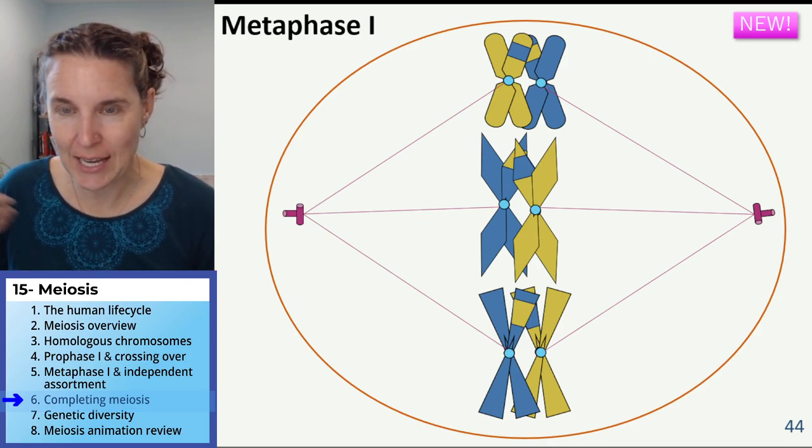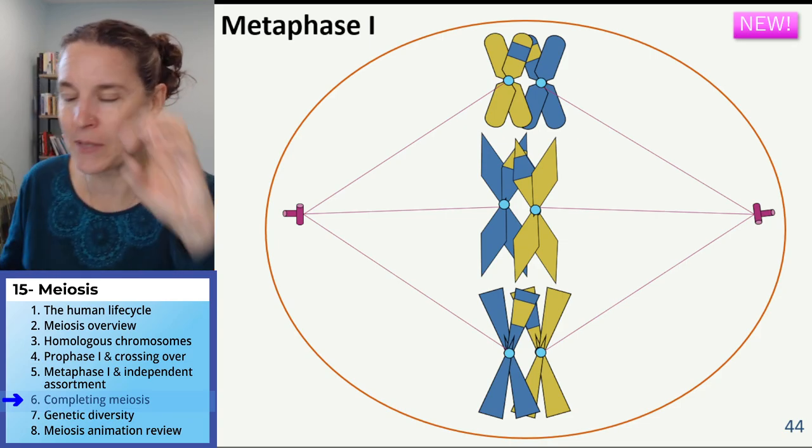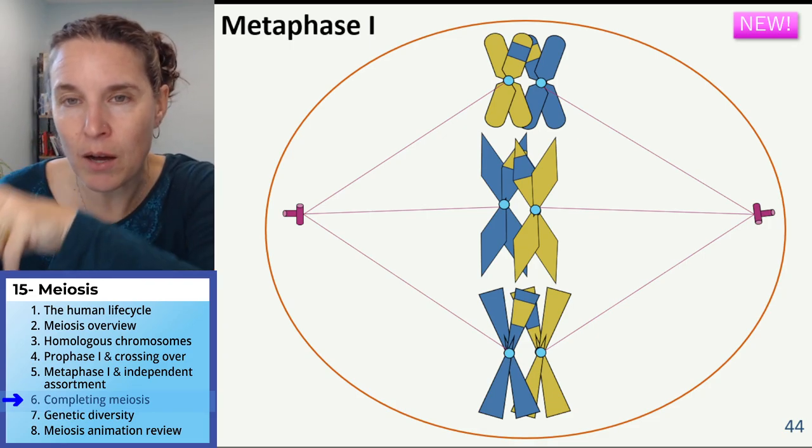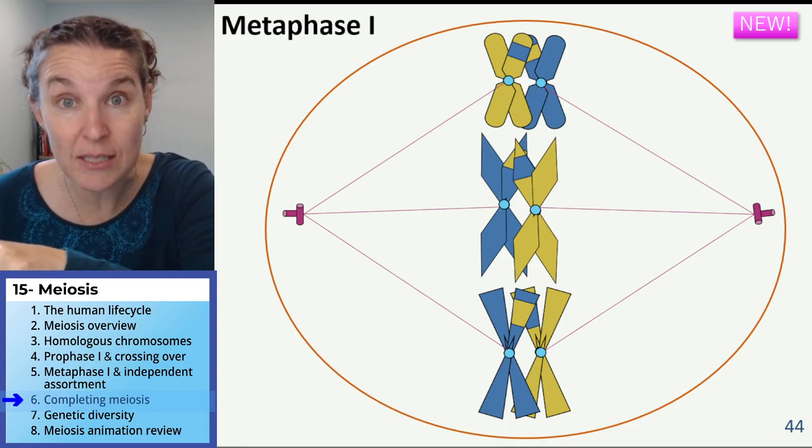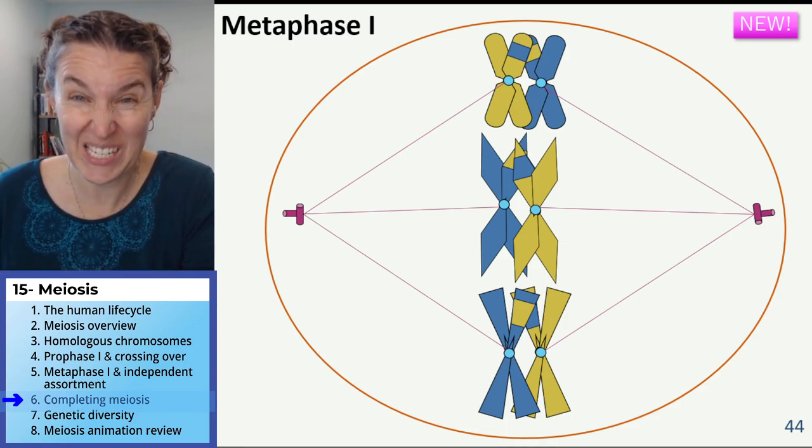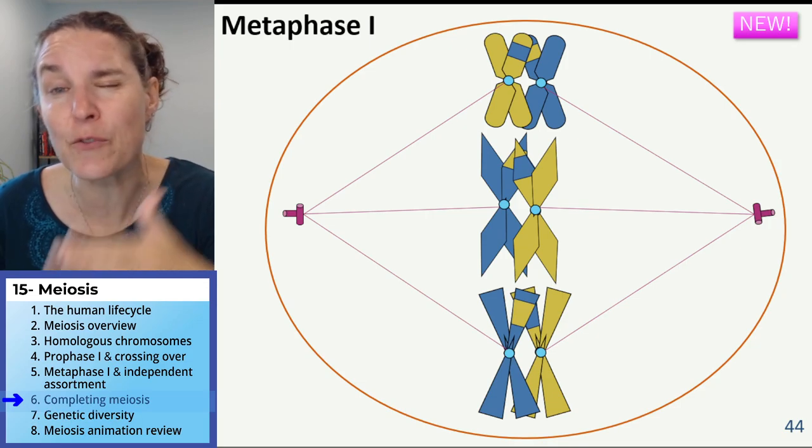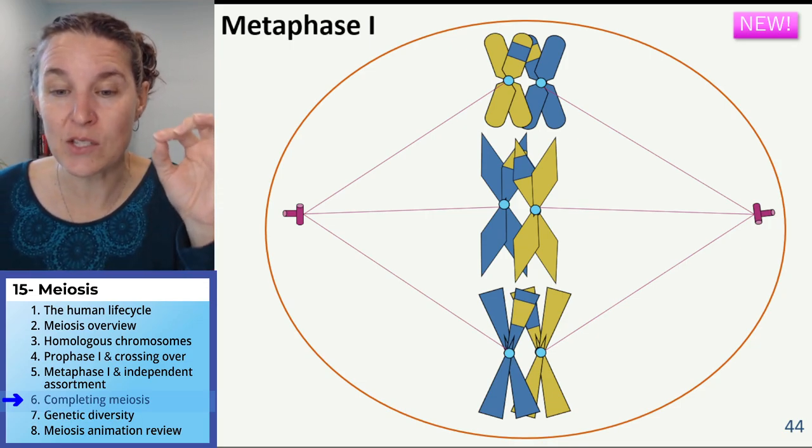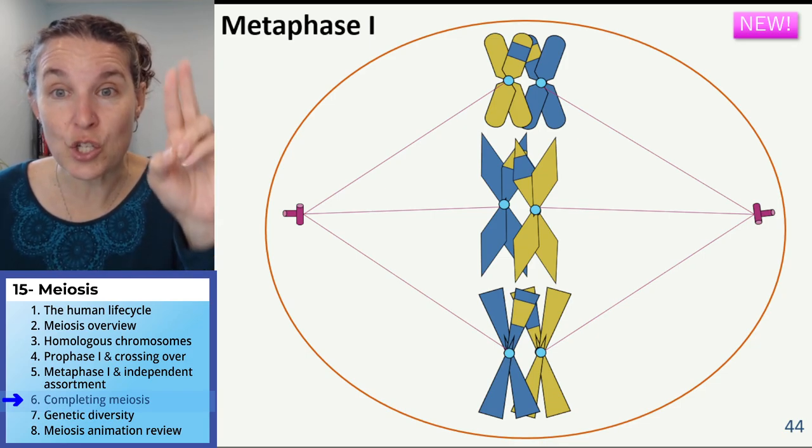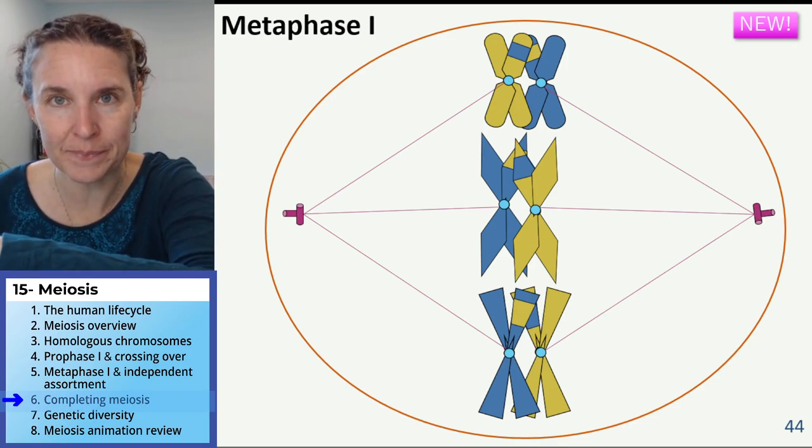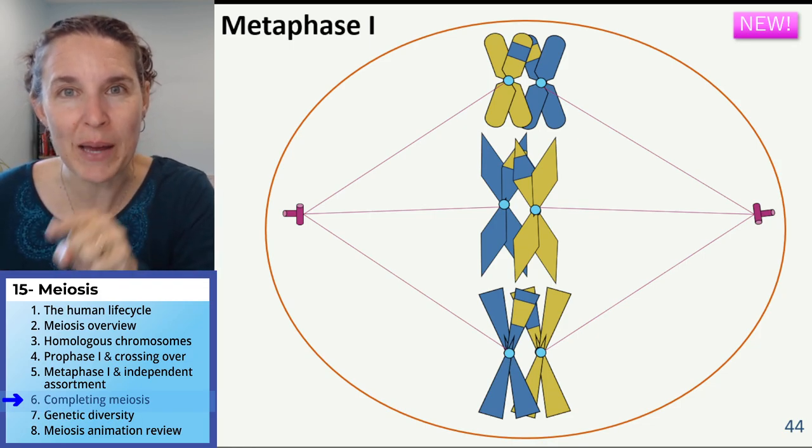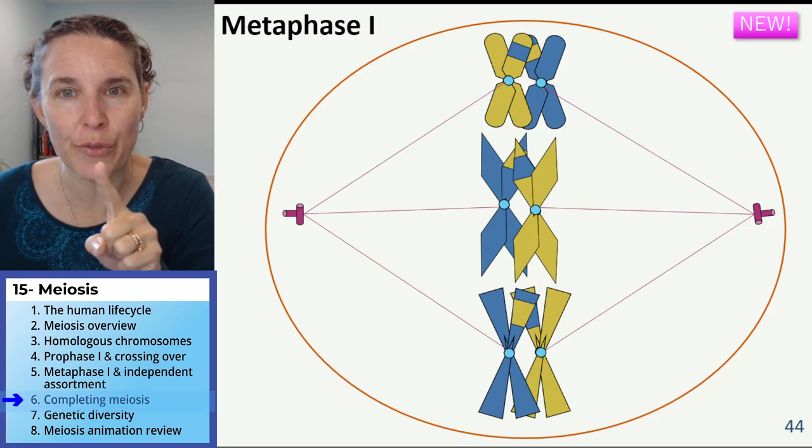I forgot to tell you, and I can't write on this PowerPoint, but you can do the math. The number of arrangements for independent assortment, the number of different ways that those chromosomes can line up, is two to the n power. In this case, it's two to the third power.